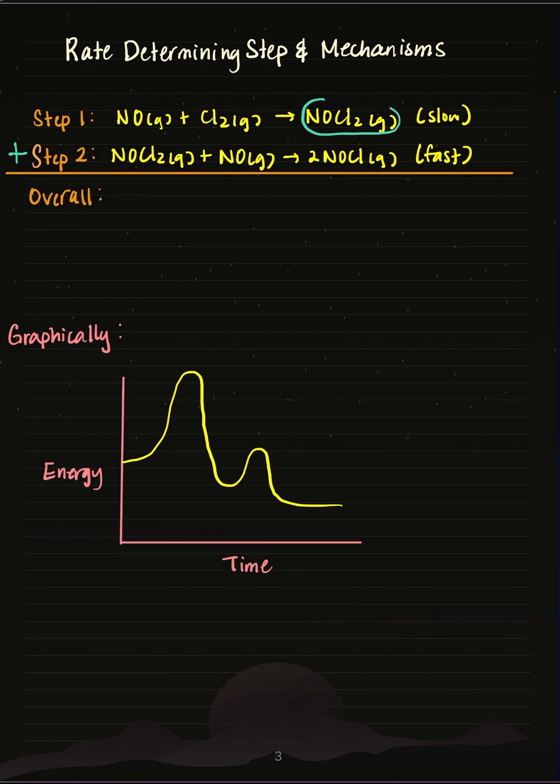Before we add them up, we notice that NOCl2 is a product in step 1 and then a reactant in step 2. So it's produced and then consumed, so it's an intermediate, and we're going to cancel it out from our overall reaction.